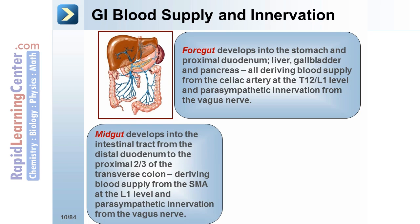Midgut develops into the intestinal tract from the distal duodenum to the proximal two-thirds of the transverse colon. It derives blood supply from the SMA at the L1 level and parasympathetic innervation from the vagus nerve.